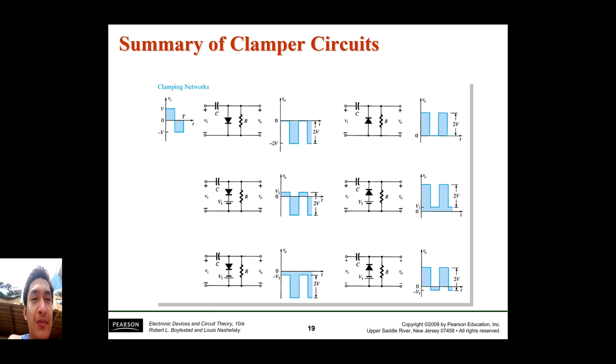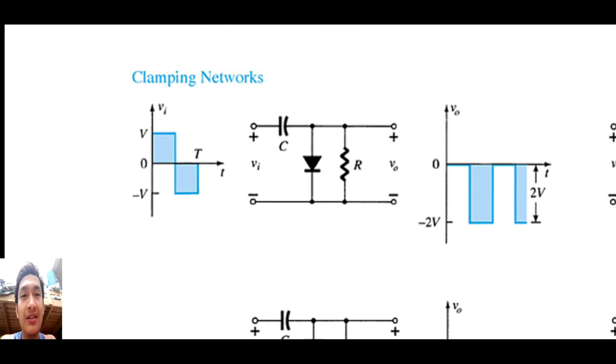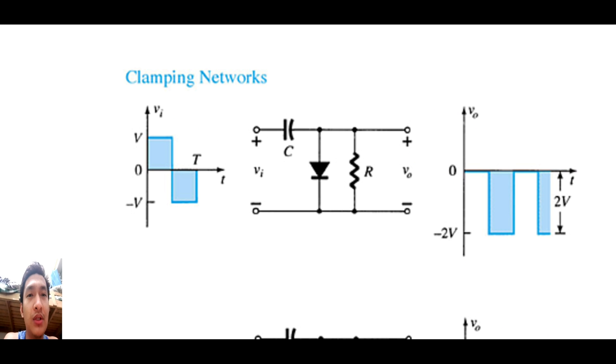This is a clamper circuit. I have here a summary of clamper circuits. Just to give you a brief introduction, a clamper circuit is called such because it clamps the signal. If you have an input here, what it does is that it clamps this signal so that it is raised higher or lower.